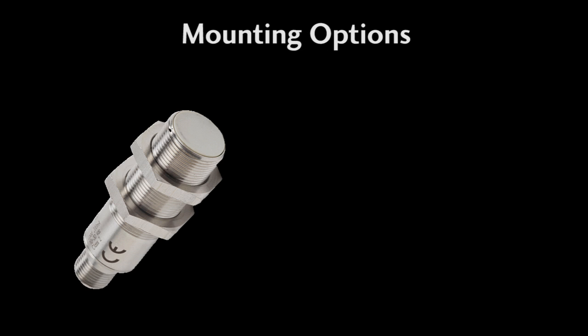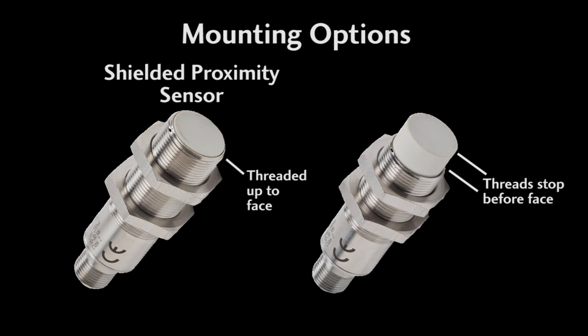There are two different mounting options for these barrel style sensors. One is optimized for flush mounted applications – it's threaded all the way up to the face. It's called a shielded sensor. And one sticks up like this – it's called an unshielded sensor.